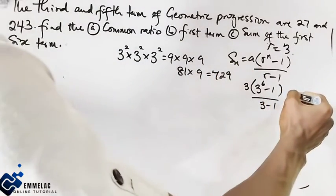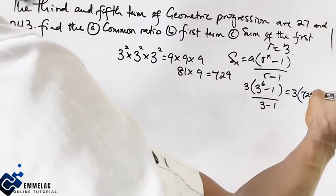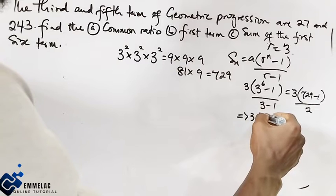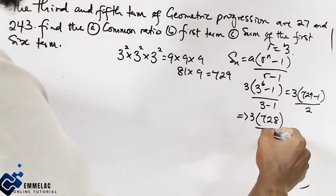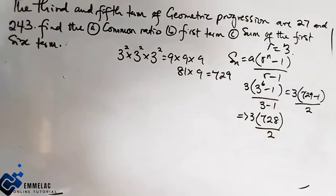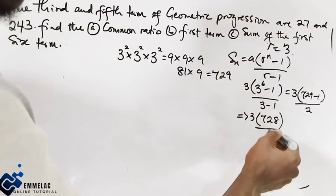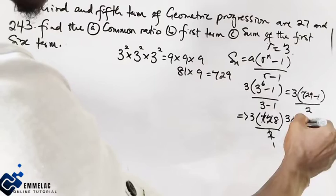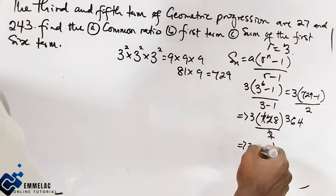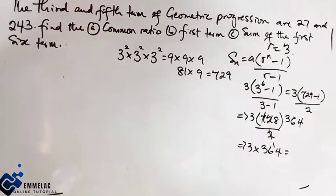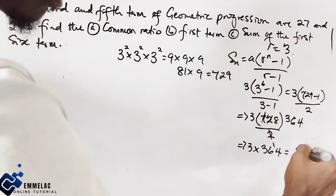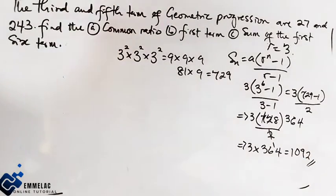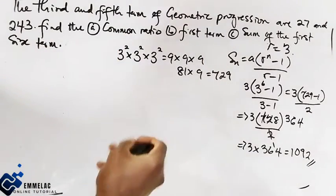So S_6 equals 3 times (729 minus 1) over (3 minus 1), which is 3 times 728 over 2. Dividing 728 by 2 gives 364. Then 3 times 364 gives us 1092. This is the sum of the first six terms when R equals positive 3.